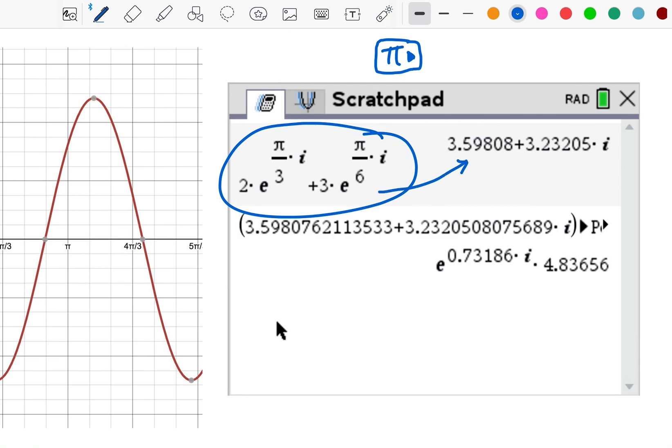Now, depending on what setting your calculator is in, it may go to this or it may go straight to the exponential form that you want. If it goes to Cartesian form, rectangular form, you can go on menu, number, complex number tools, and convert to polar.